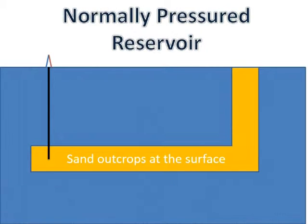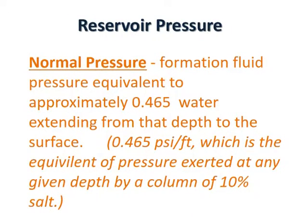Before you is a normally pressured sandstone reservoir. The reservoir is considered to be normally pressured because the sand outcrops at the surface. If the sand outcrops at the surface, the pressure exerted is the result of the fluid densities in the sandstone and not the overburden of the rock. A normally pressured reservoir is one where the formation fluid pressure is equivalent to approximately 0.465 psi per foot, equivalent to the pressure exerted at any given depth by a column of water with a 10% salt solution.